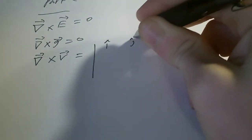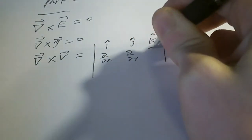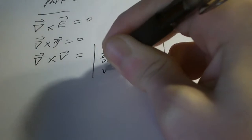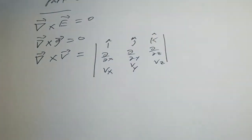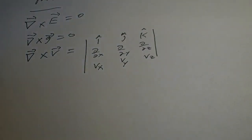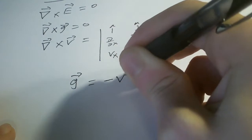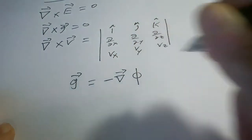You can check this: the curl of some vector field v equals the determinant of i, j, k; d/dx, d/dy, d/dz; and the components. This is the curl in Cartesian coordinates. Since this curl is zero, we can write that g equals minus the gradient of some scalar field phi.